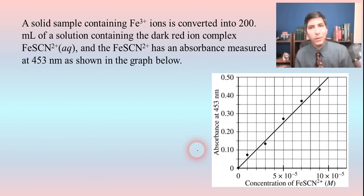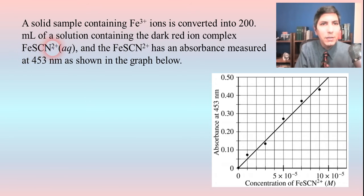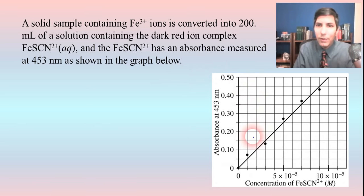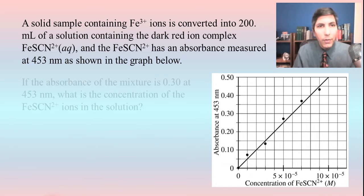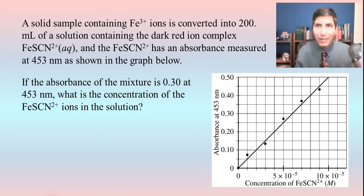Here's another example with another calibration curve. A solid sample containing iron three ions is converted into 200 milliliters of a solution containing the dark red ion complex FeSCN²⁺, which is the iron thiocyanate ion. This iron thiocyanate has an absorbance measured at 453 nanometers as shown in the graph. The question is: if the absorbance of the mixture is 0.30 at 453 nanometers, what is the concentration of the iron thiocyanate ions in the solution?